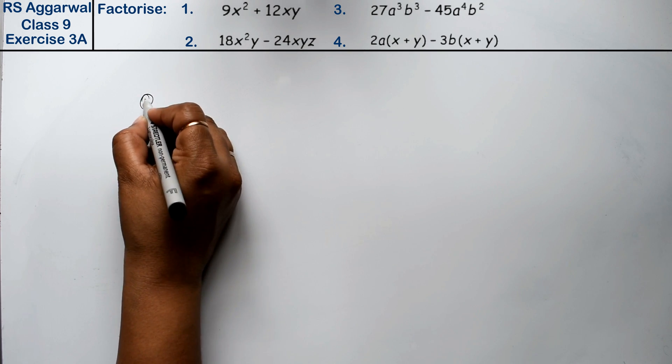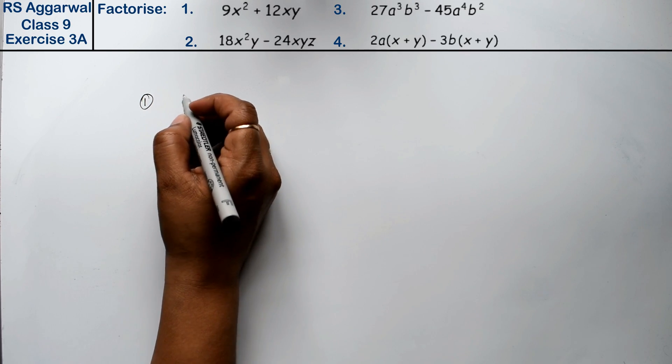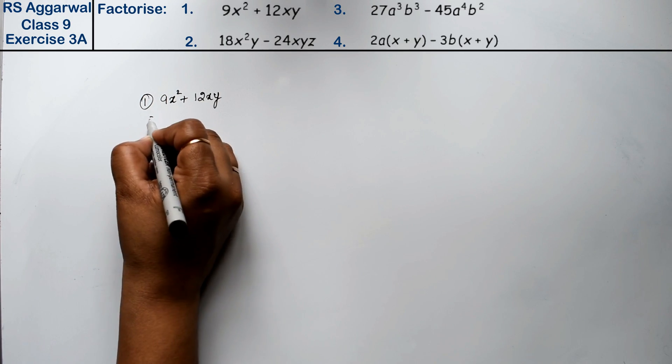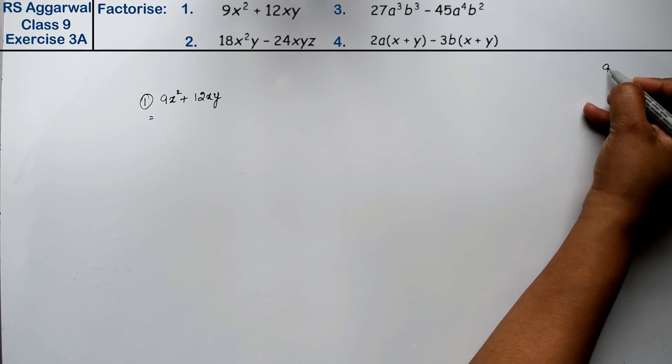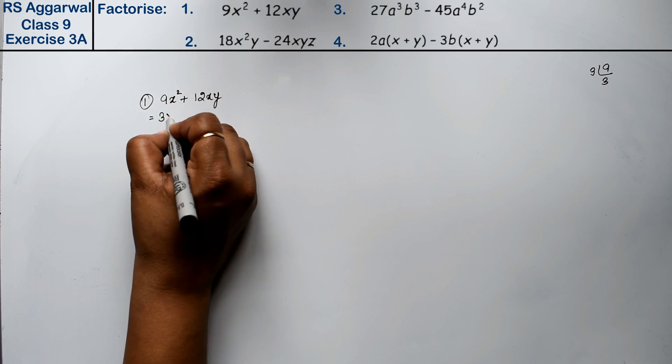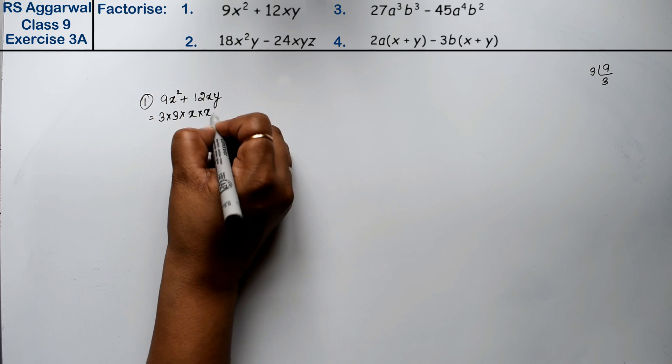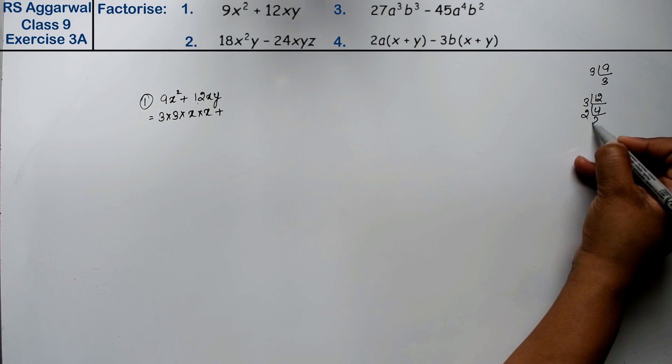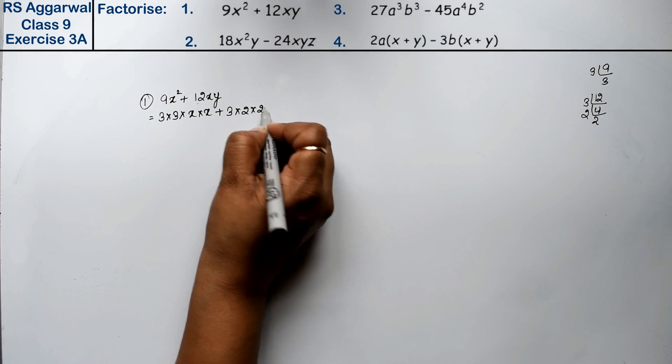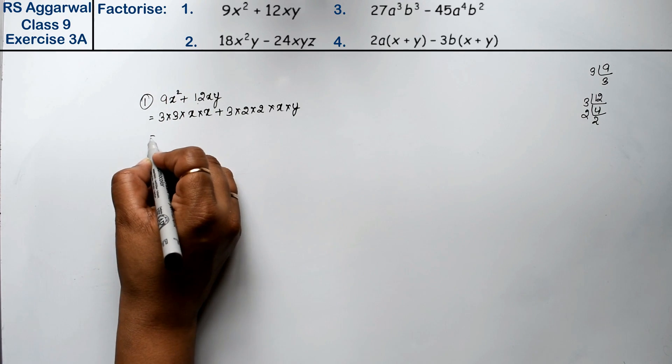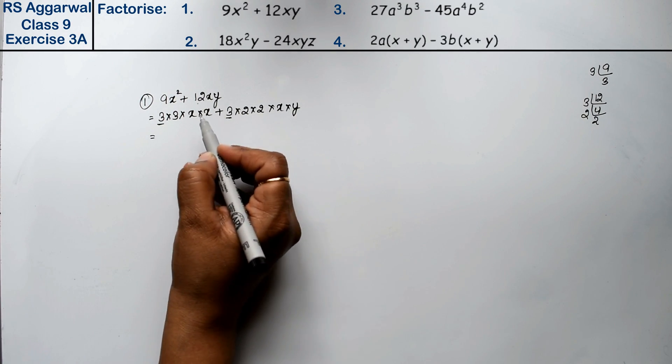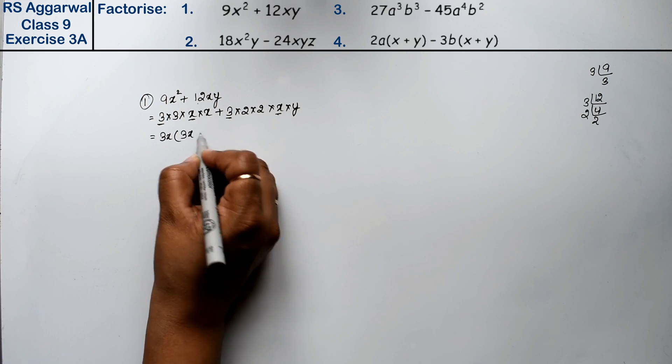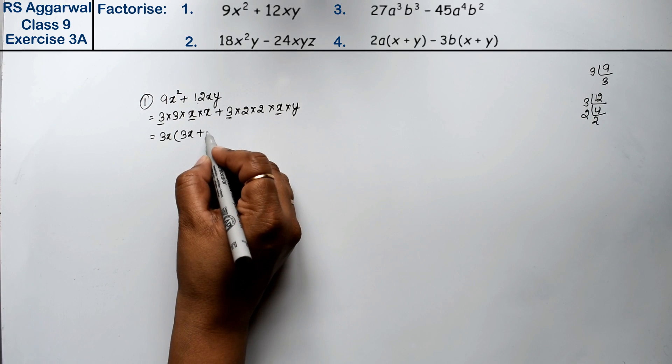Let's do question number first of exercise 3A, that is factorization of polynomials. Question number first is 9x² + 12xy. Now see, 9 can be written as 3 × 3, so 3 × 3 × x × x. Plus 12 can be written as 3 × 4, and 4 is 2 × 2, so 3 × 2 × 2 × x × y. Now 1, 3 is common, 1, 2 is common, 1 x is common. 3x is common. What remains? 3x and 4y. So the answer is 3x(3x + 4y).